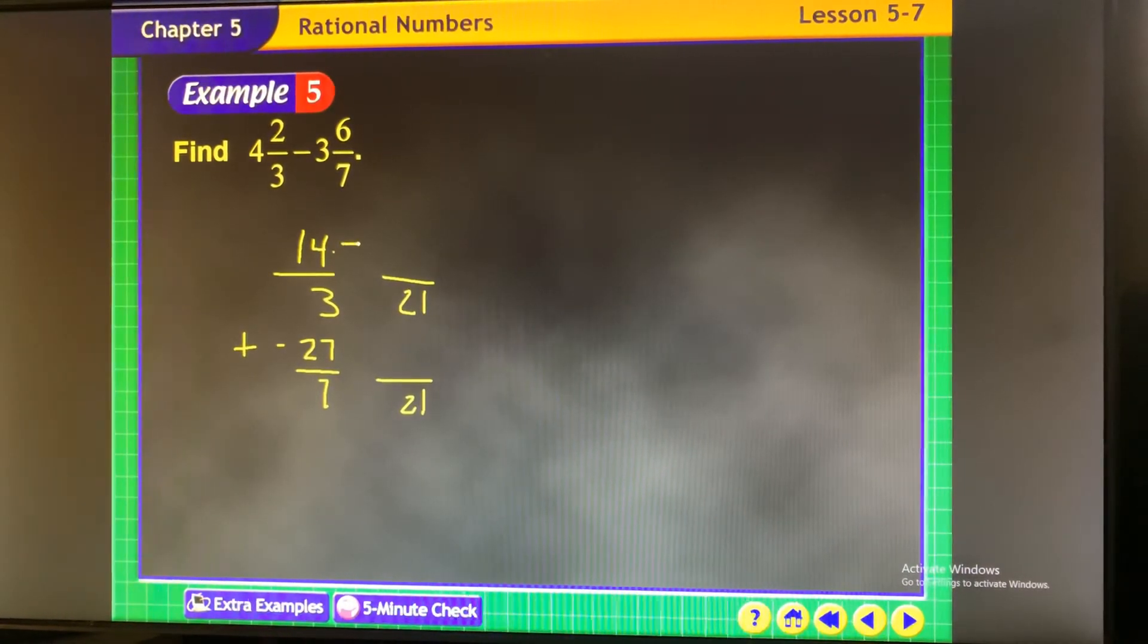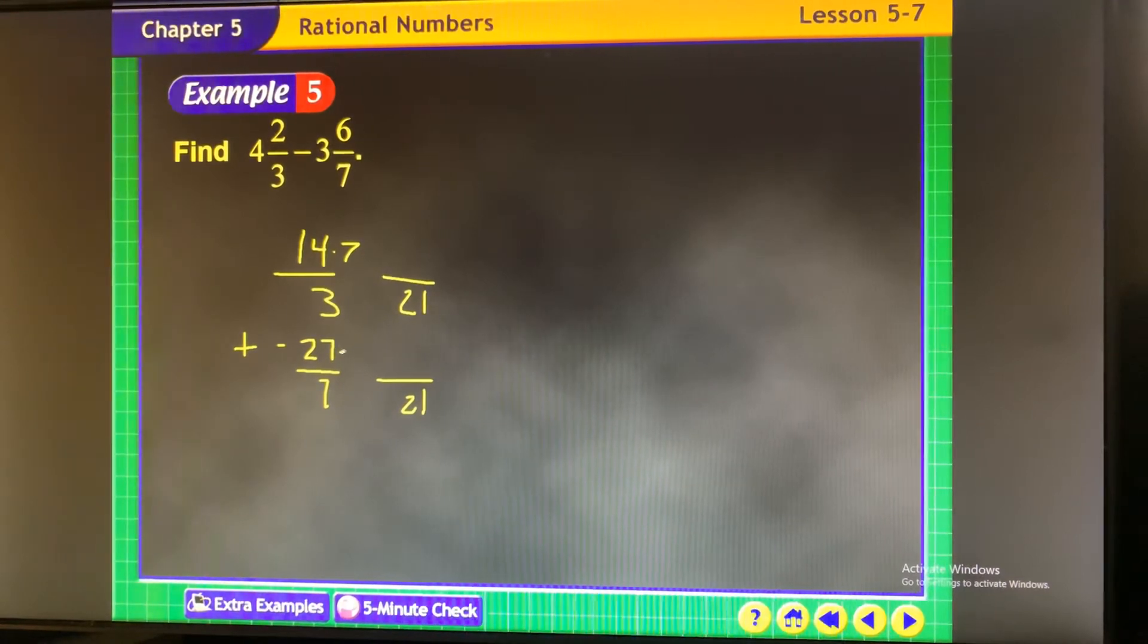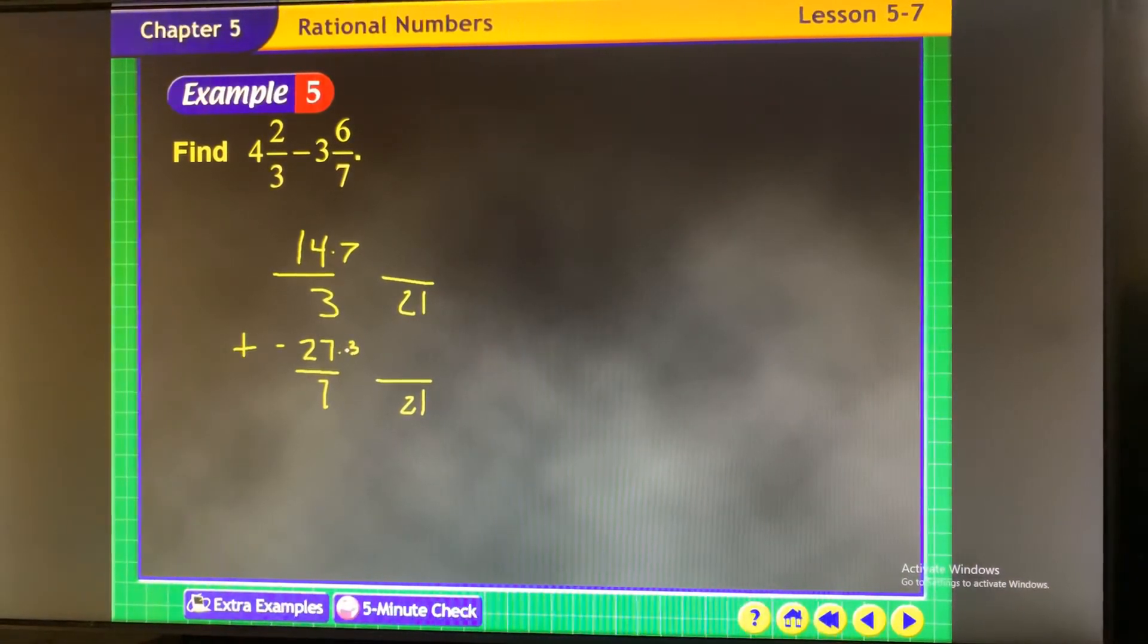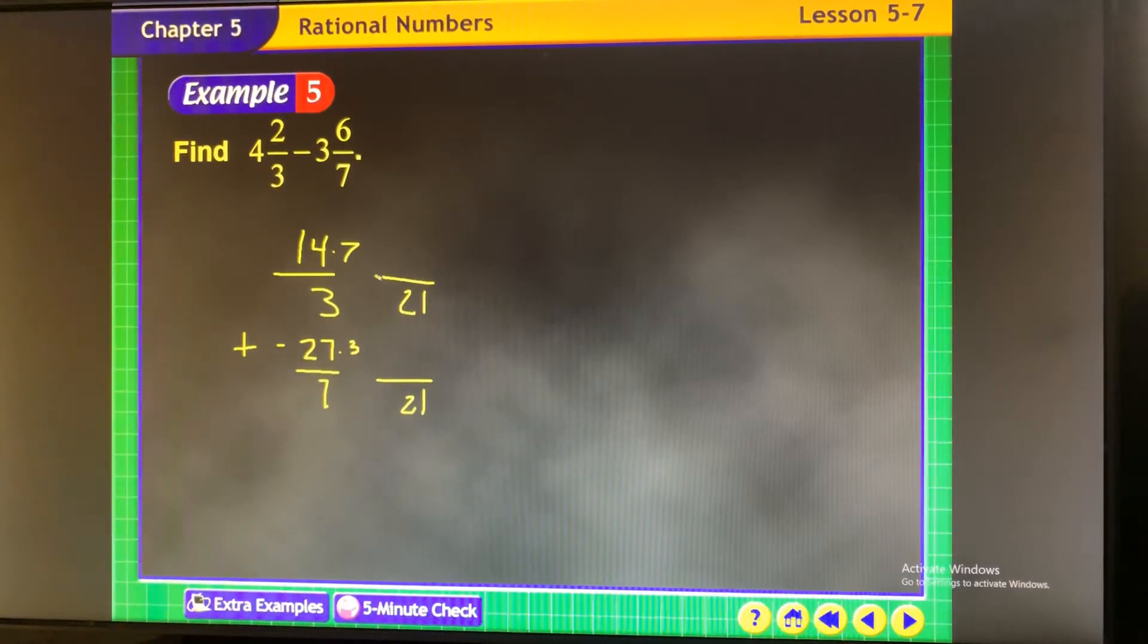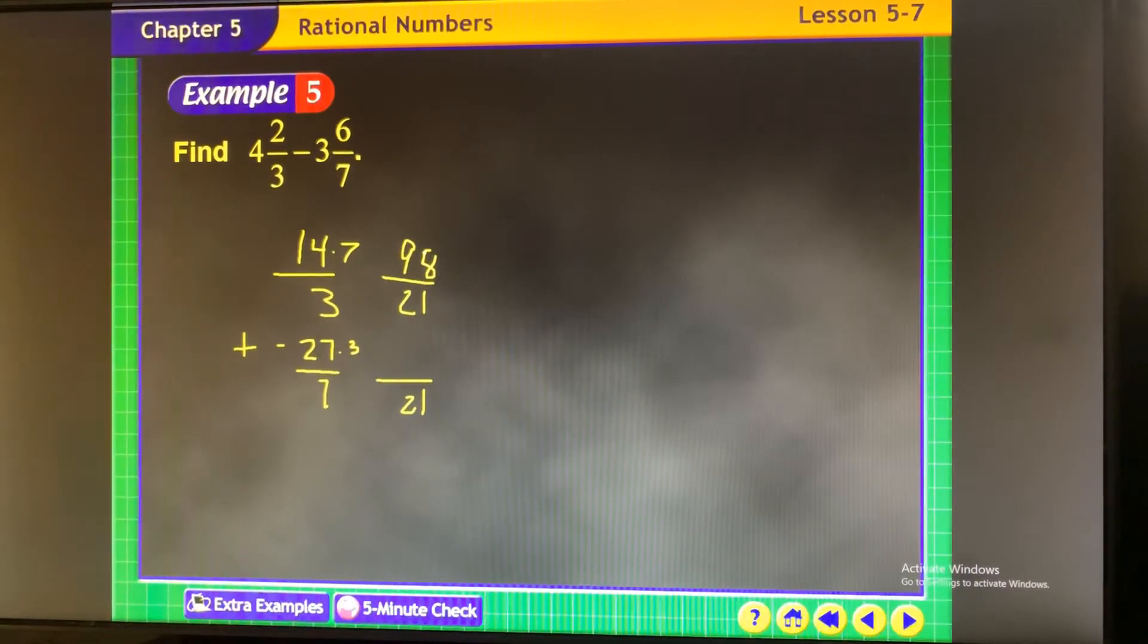You're going to go times 7 here. And you're going to go times 3 here. Make sure you don't drop those negatives. So pay attention to what you're doing. So 14 times 7 is 98. And 27 times 3 is 81.